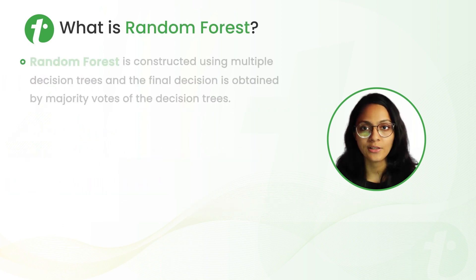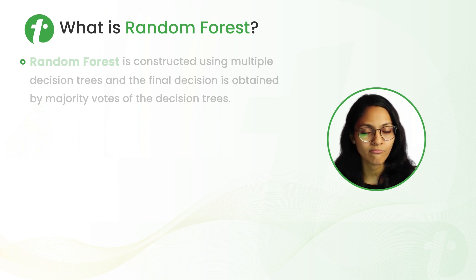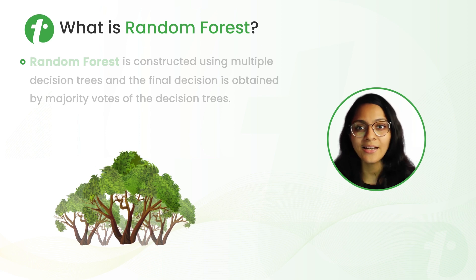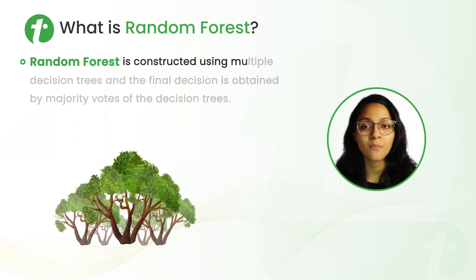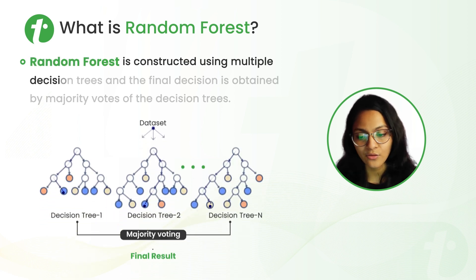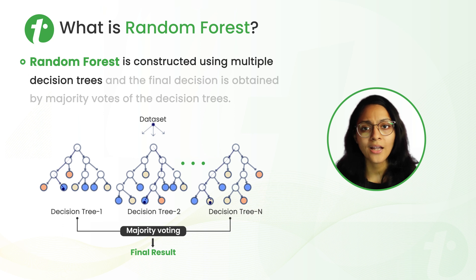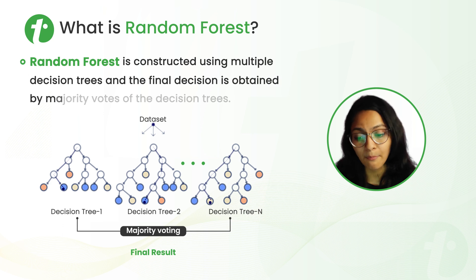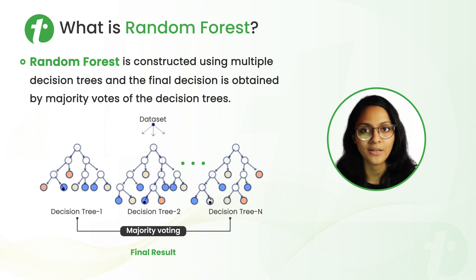What is random forest? Before that, can you tell me what is a forest? Obviously, the group of trees is called a forest. Similarly, random forest is constructed using multiple decision trees. How do we take the final decision in the random forest algorithm? The final decision is obtained by the majority votes of the decision trees.